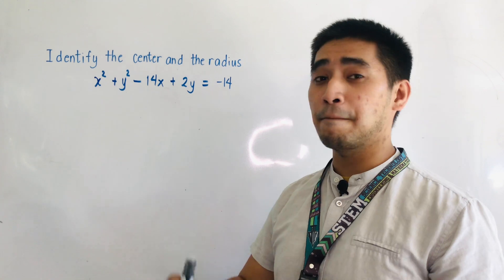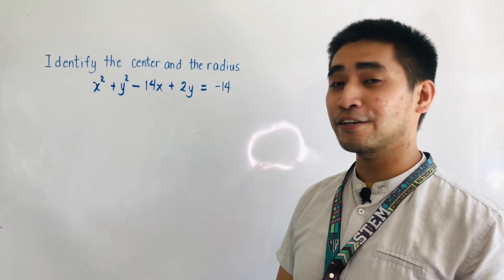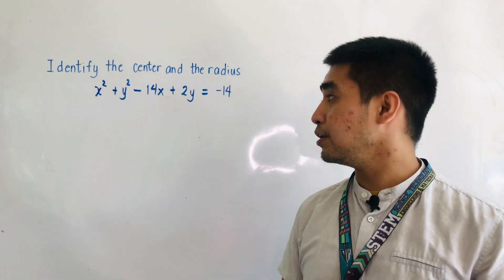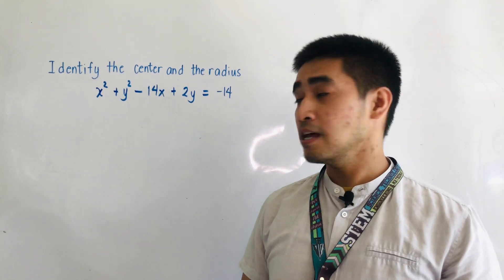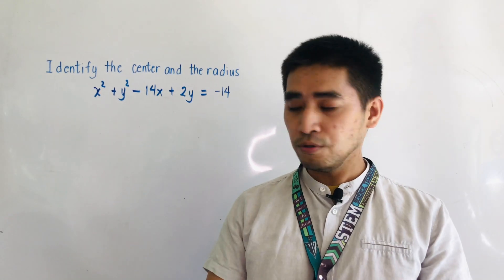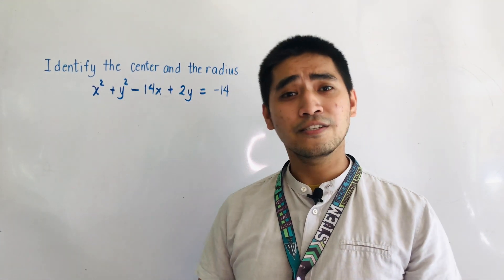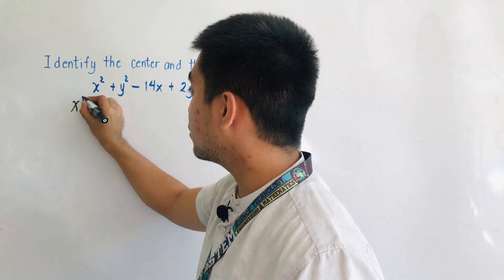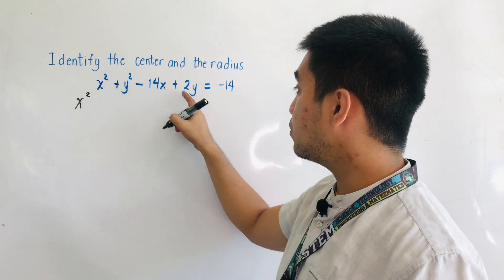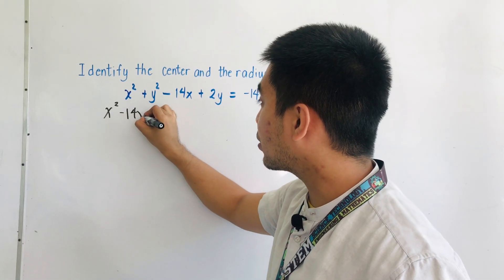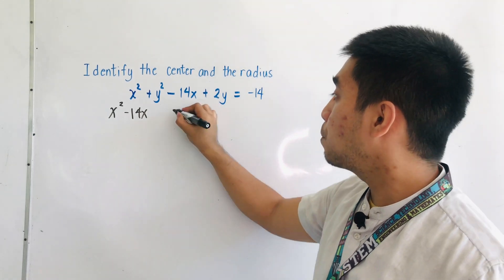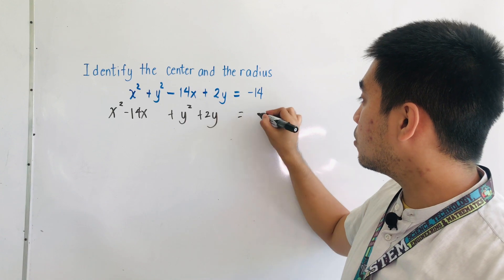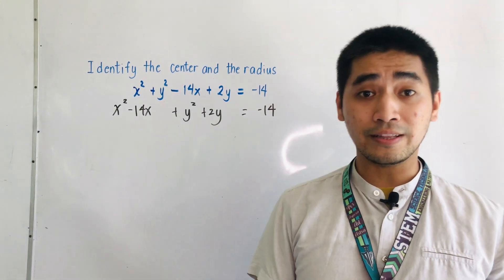So let us have this example. Identify the center and the radius having the equation: x squared plus y squared minus 14x plus 2y is equal to negative 14. First step is that we need to rewrite the equation as x squared minus 14x plus y squared plus 2y is equal to negative 14.